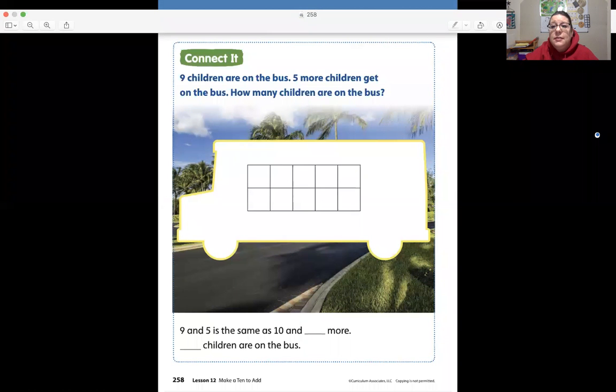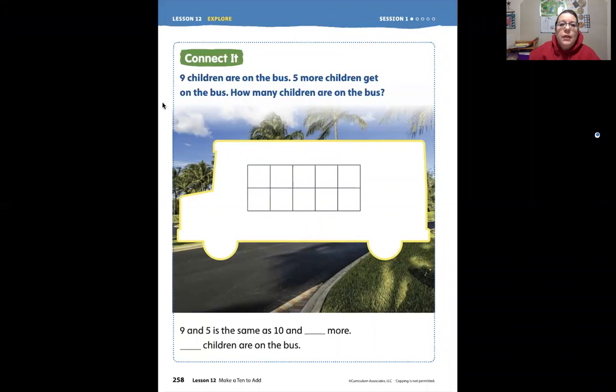So let's see what it says. There are nine children on the bus. Five more children get on the bus. How many children are on the bus? So we're starting with nine. That's a part. We're adding five more, which is another part. And we're going to put them together to make the whole, right? So we start with nine, and we're going to add five more.